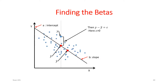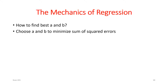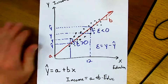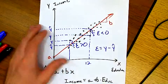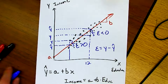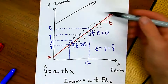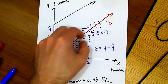With this in mind, I've got error terms for every single observation. I need to figure out what A and B values give me this line of best fit. What does 'best fit' mean? The way we define it is we try to choose A and B values to minimize the sum of the squared errors. Intuitively, I'm trying to minimize the sum of all these errors — I want to choose the line where I'm making the smallest amount of errors.